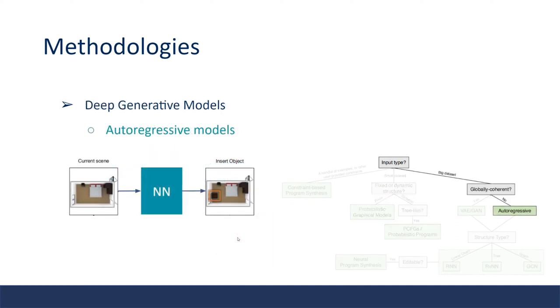When a large amount of training data is available, deep neural networks often prove to be the best choice. An autoregressive model is one of the examples of such generative DNN models. It iteratively consumes its output from one iteration as the input to the next iteration. For example here, the model inserts one object at a time to finally generate an indoor scene.